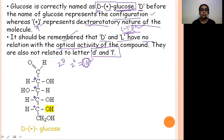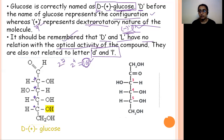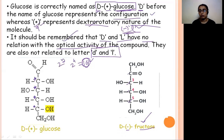This is D-(+)-glucose. Always remember: most naturally occurring sugars are dextrorotatory and D-sugars. This is fructose: CH₂OH, C=O, then CHOH groups, CH₂OH — and this is D-(−)-fructose. So fructose is levorotatory but it is a D-sugar. Naturally occurring fructose is levorotatory, but it is a D-sugar. Most sugars occurring in nature are D-sugars, but fructose is levorotatory while glucose is dextrorotatory.